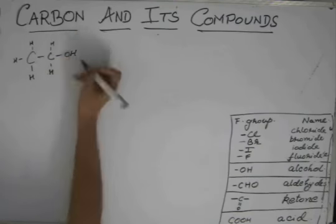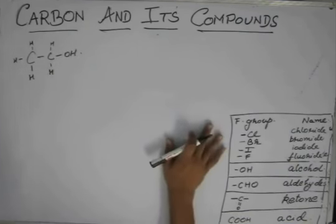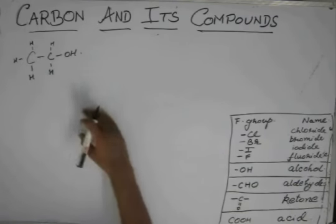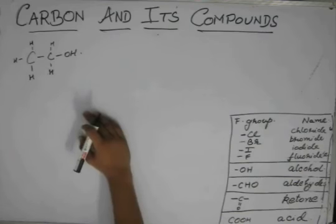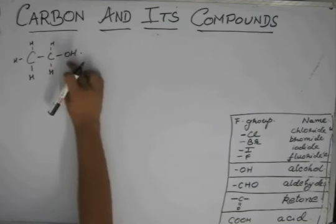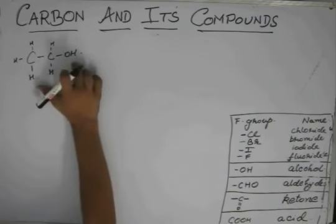And suppose you have an alcohol over here. Remember that the functional groups always replace hydrogens from the chain. They do not replace carbons from the chain. So this hydrogen is replaced by this OH group, which makes it an alcohol.